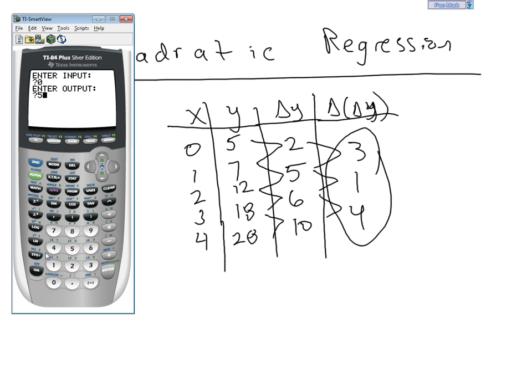We'll enter our inputs and our outputs now. 0, enter, 5, enter. 1, enter, 7, 2 and 12, 3 and 18, 4 and 28.